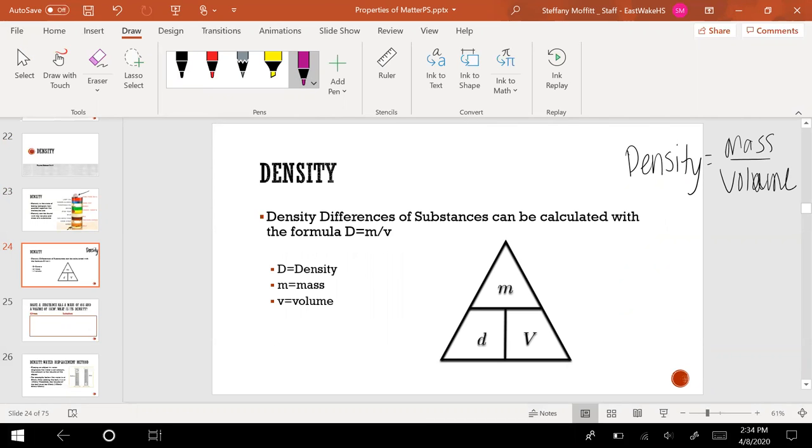If we're trying to find mass, we cancel that out and we'll do density times volume. If you're trying to find volume, you cancel that out, you do mass divided by density. And if you're trying to find density, you cancel that out and you do mass divided by volume. That's just our simplistic way of figuring out which equation we should use.